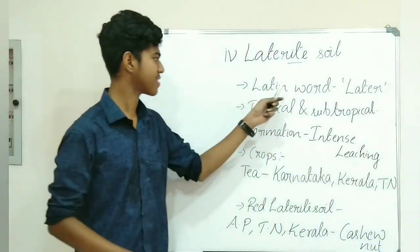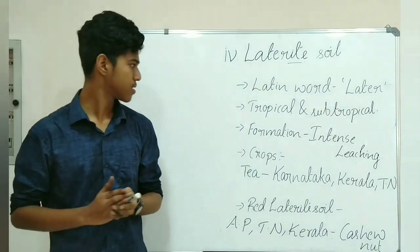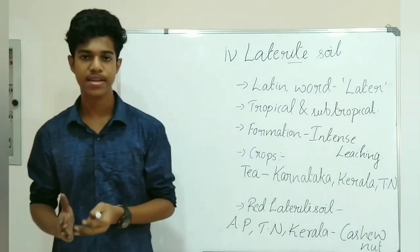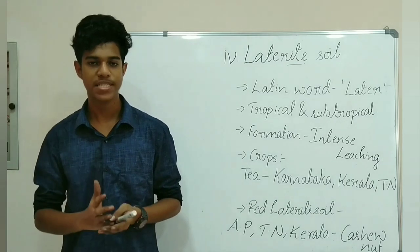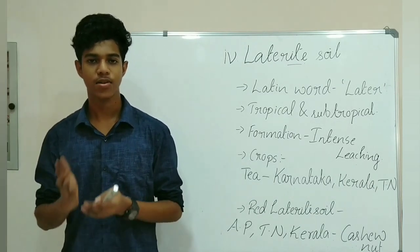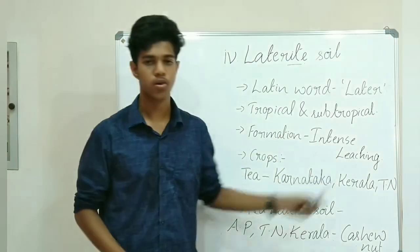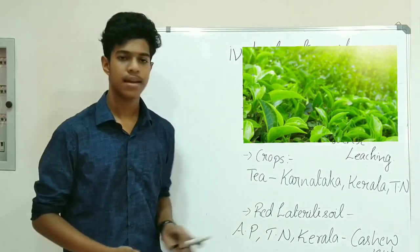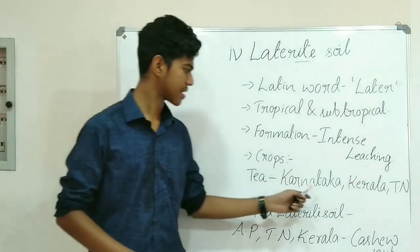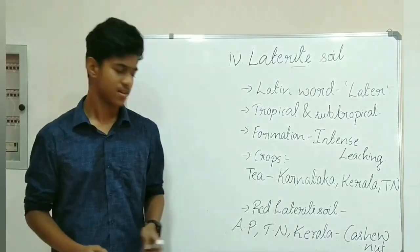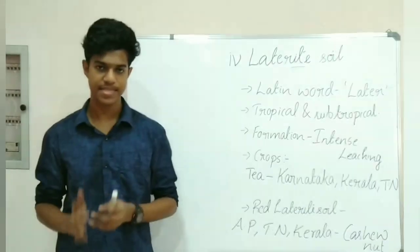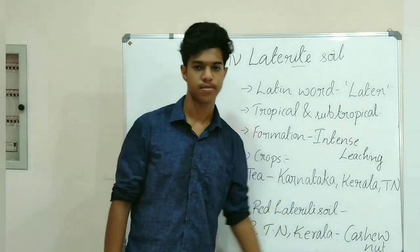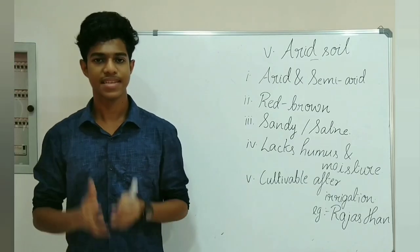The fourth soil is laterite soil. The word 'laterite' is derived from the Latin word 'later' which means brick. Laterite soil is found in tropical and subtropical regions with alternate wet and dry climate. It is formed due to intense leaching or erosion caused by heavy rain. The major crop cultivated on laterite soil is tea, grown in Karnataka, Kerala, and Tamil Nadu. Red laterite soil found in Tamil Nadu and Kerala is very suitable for the cultivation of cashew nut.